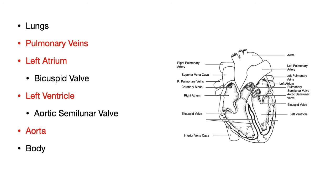Then blood moves through the bicuspid valve into the left ventricle. The left ventricle is the strongest chamber of the heart because it has to pump the furthest. It pumps blood through the aortic semilunar valve, into the aorta, and then goes to the body.